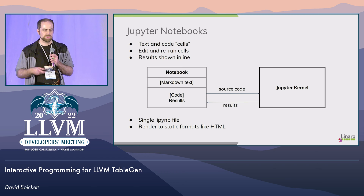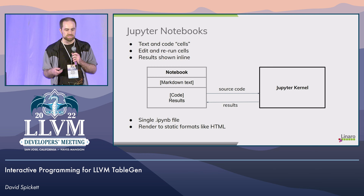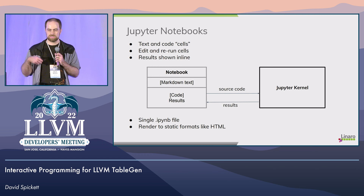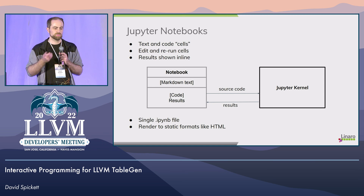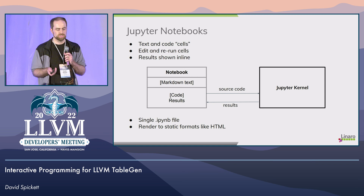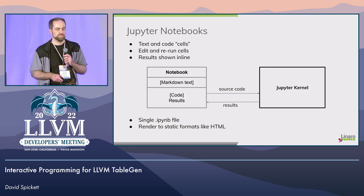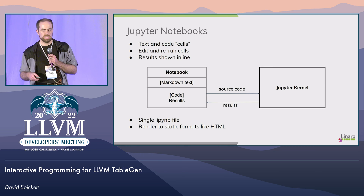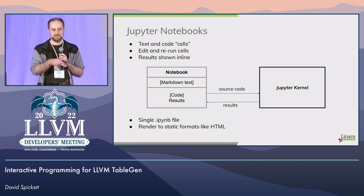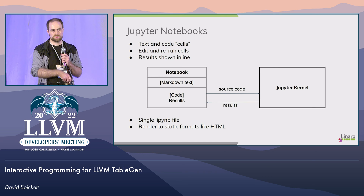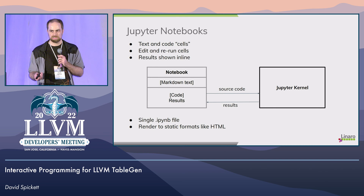Results can be images, HTML, or interactive content. In our case, just the stdout from the TableGen compiler. The cool thing is this notebook is contained in a single JSON file, and you can commit that into source control. You can also render that notebook into static formats like HTML or PDF, so you could upload it straight to GitHub and you don't have to install Jupyter locally.